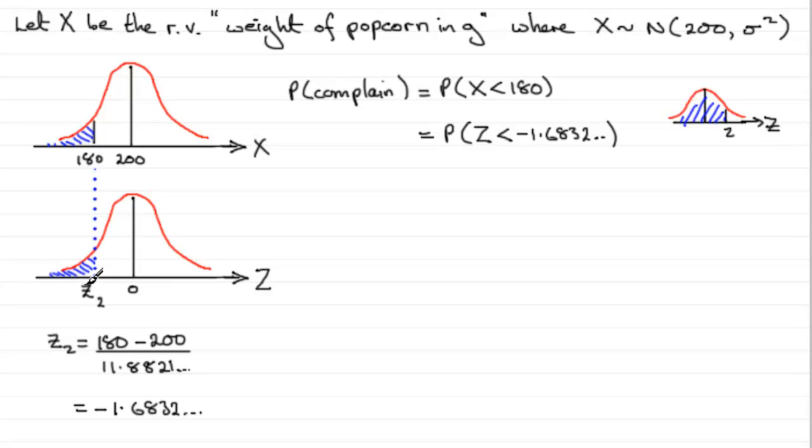what we do is we mirror this value over the 0 line to the other side. So it's going to be a value over here. Instead of it being minus 1.6832, it's going to be the positive version of that. So it's going to be 1.6832. That would be that Z value there.